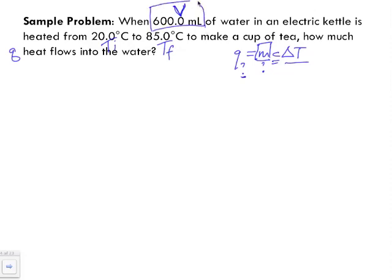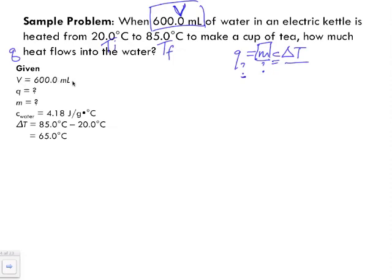Let's look at some of our givens. Always start off with our givens. We've got our volume which is 600.0 milliliters, but it's not useful to us in this equation. Our q is what we're really trying to find, so really this mass is also what we're trying to find, but this is the step that we need to do first.